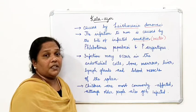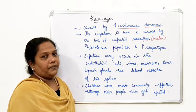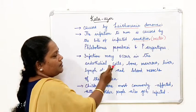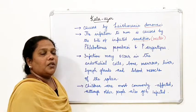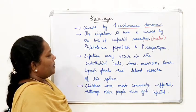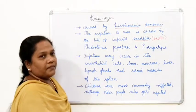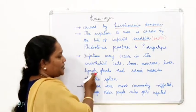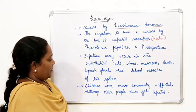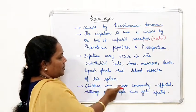The other part of the life cycle of Leishmania continues in man. Infection may occur in the reticuloendothelial cells of the liver, bone marrow, lymph glands, and blood vessels of the spleen.